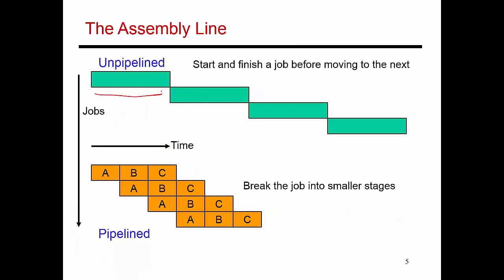Here is one instruction executing in a single cycle. Now I've decomposed that one task into three different circuits: circuit A, B, and C. Just for the sake of example, let's say this is instruction memory, this is ALU, this is data memory. As an instruction goes from the instruction memory stage to the ALU stage, the instruction memory stage can start processing instruction number two.